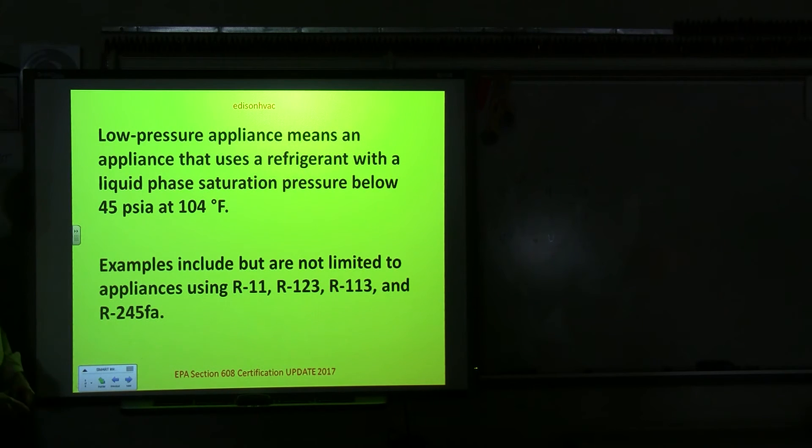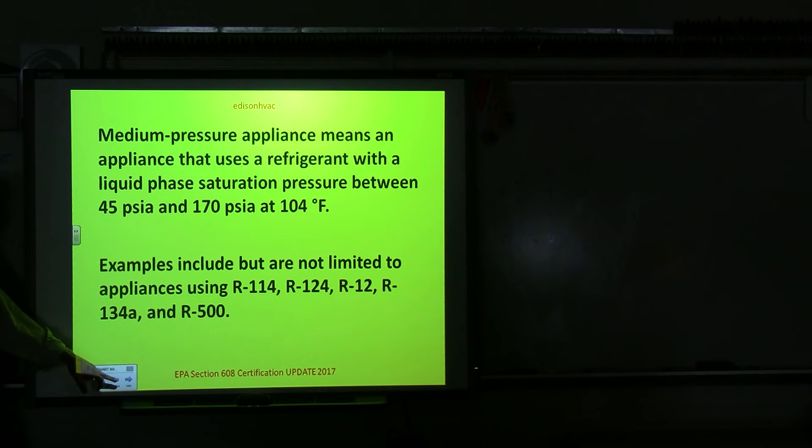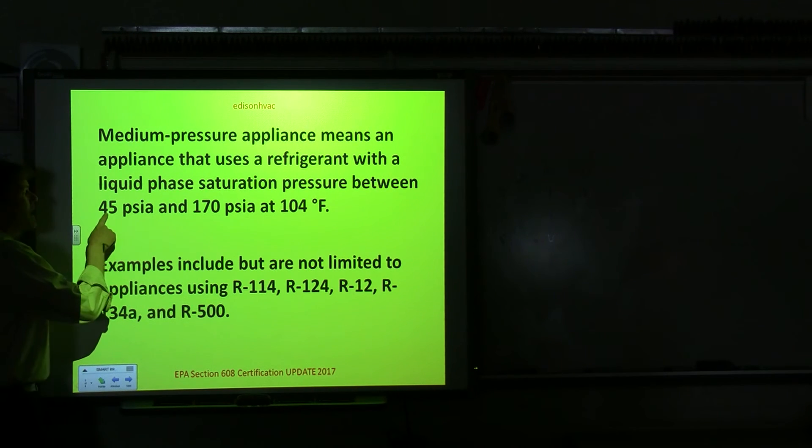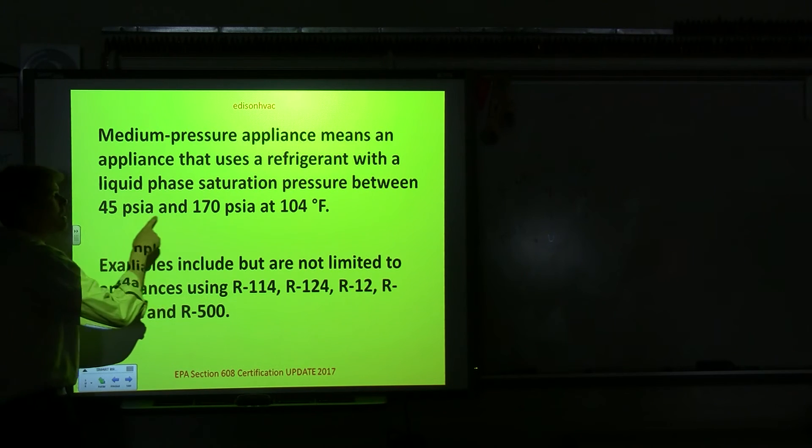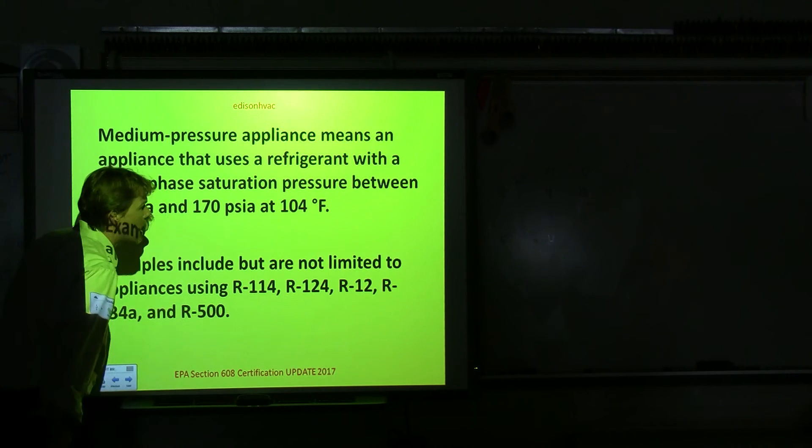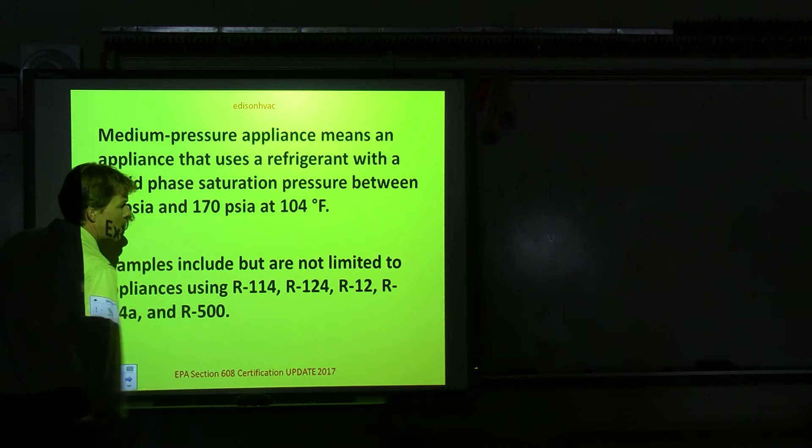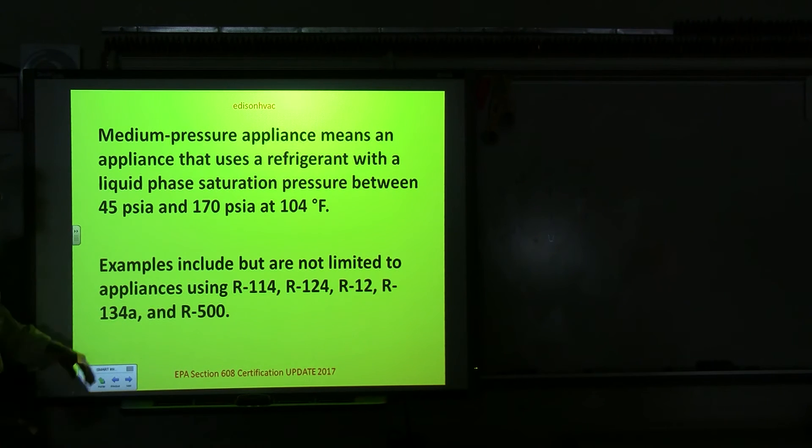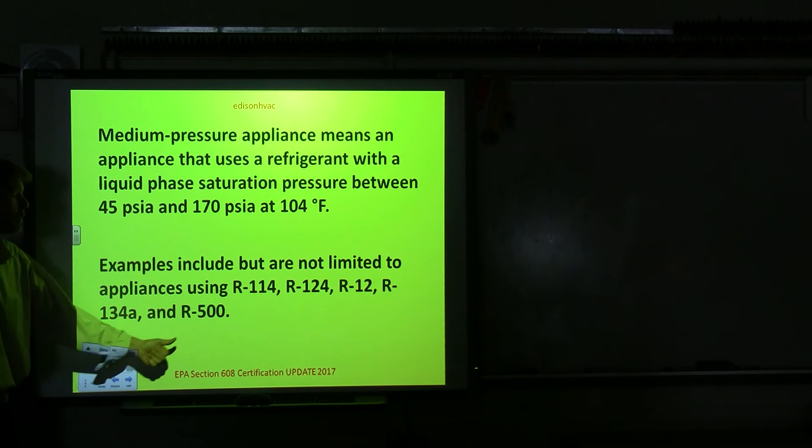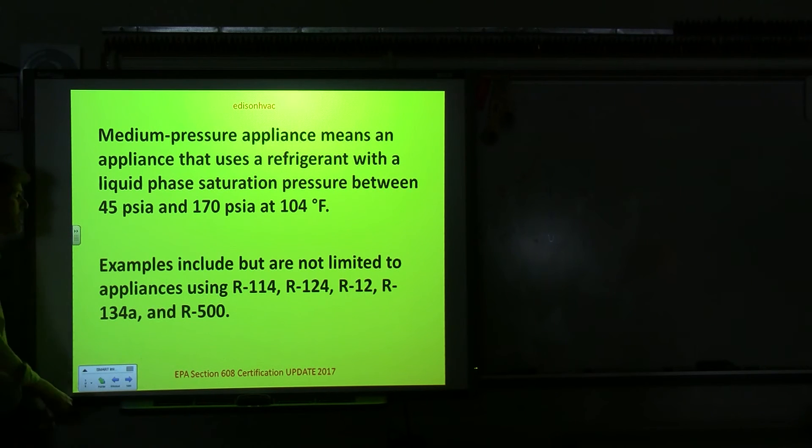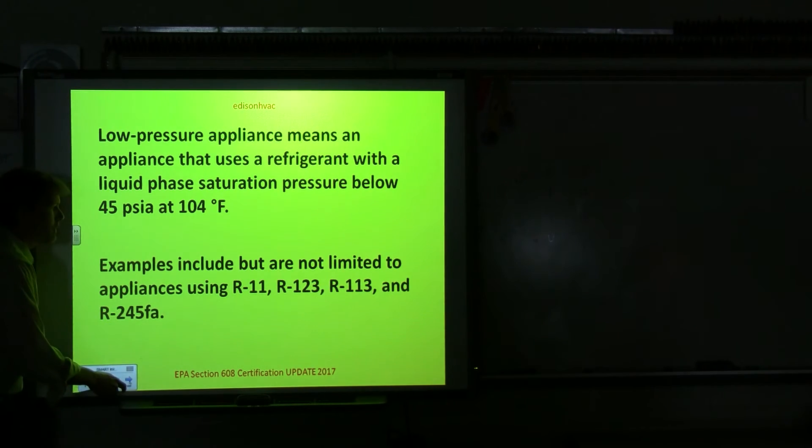And then the definition of a low pressure appliance then, did I skip medium? Medium. Medium pressure appliance is anything between 45, that's about 30 PSIG, and 170 PSIA. And those are R114, 124, the old R12 refrigerant, and the new 134A, as well as if anybody's using R500. But that's a CFC, so that's probably phased out by now.